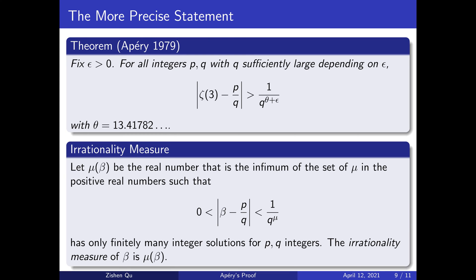If the irrationality measure is 1, then β is a rational number by the irrationality criteria we had earlier. Dirichlet's original result, unstated here, gives us that irrational numbers have an irrationality measure at least 2.